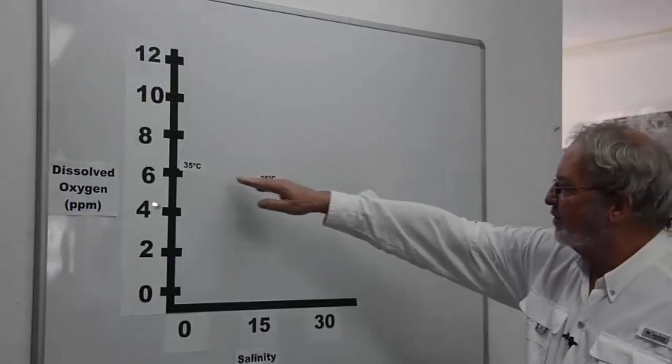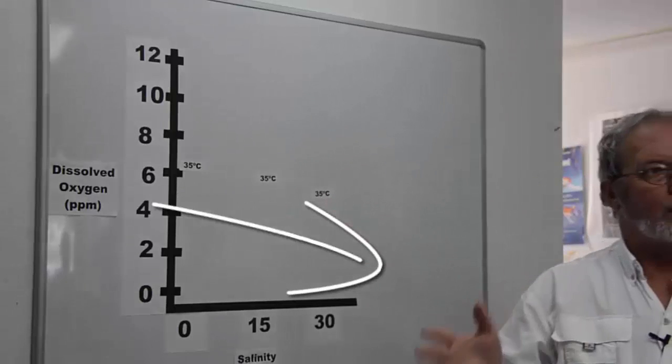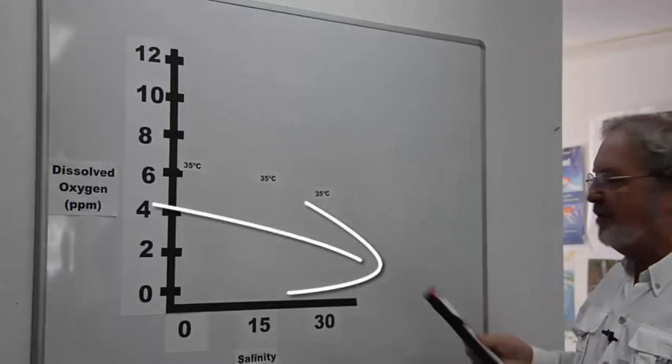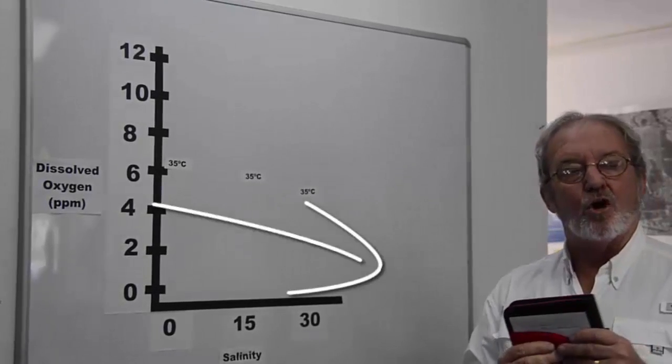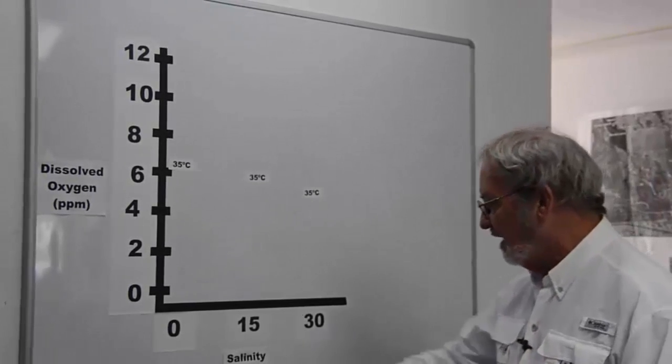So as you can see here there was a gradual decline. At the same temperature there was a gradual decline with an increase in salinity. Now let's look at the cold water, the 5 degrees centigrade, and see what we have.